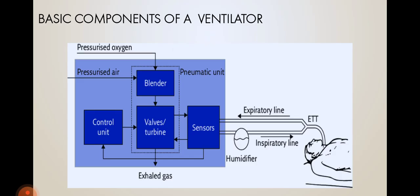Basic components of a ventilator: a blender, which blends the air and the pressurized oxygen; valves and turbines; sensors; and a control unit where we can control the volumes and capacities according to the person's needs. There is also an expiratory line and an inspiratory line. The inspiratory line has a humidifier which humidifies the air. These are the basic components.